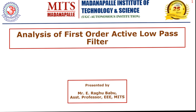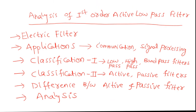An electric filter is a circuit that allows certain frequencies of signals and blocks or rejects other frequencies of signals. This is the basic definition of an electric filter. These filter circuits are mainly used in communication systems and signaling process applications, especially to separate a desired signal from an undesired signal so as to improve the quality of audio and video systems.